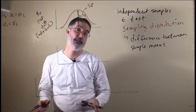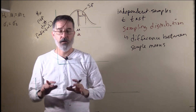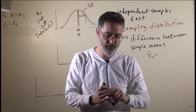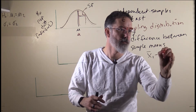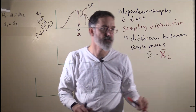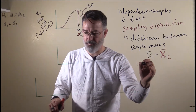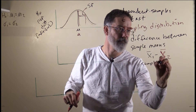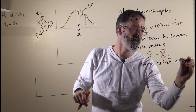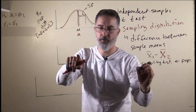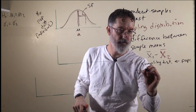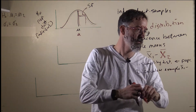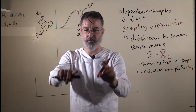To explain how the sampling distribution is created for the independent samples t-test, conceptually I want to break it into three different parts. Ultimately we are going to produce a distribution of difference scores between the samples. The first step is to produce the different sampling distributions for the red and the black from the populations. The second step will be to calculate example difference scores to get a sense of how those are distributed.